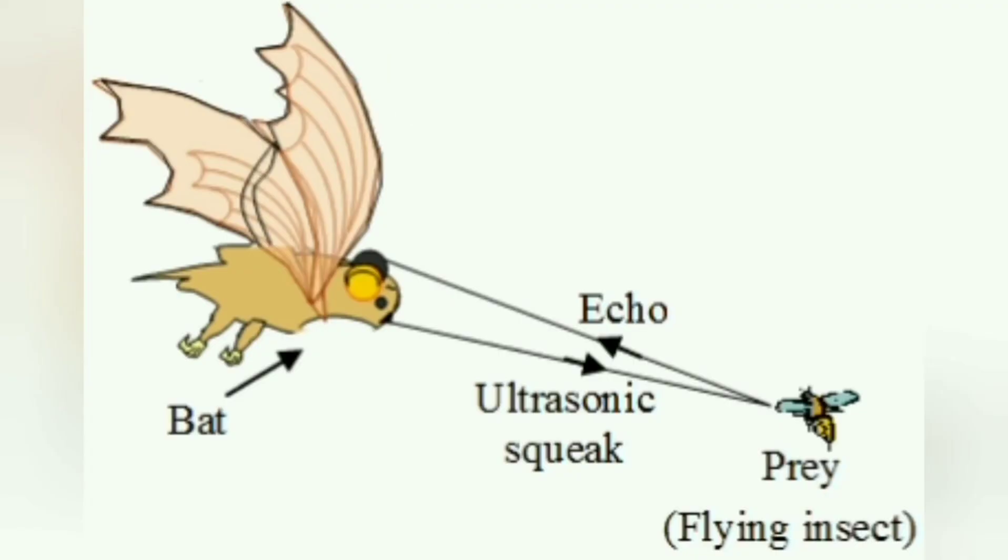The leaf-nosed bats use ultrasonic sound waves and echoes, which is known as echolocation, to capture prey such as crickets. When bats send out sound waves using their mouth or nose, when the sound hits an object, an echo comes back. The bat can identify an object by the sound of the echo.